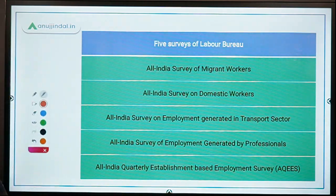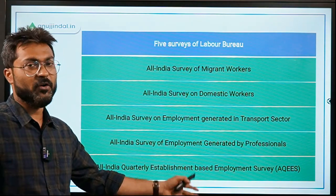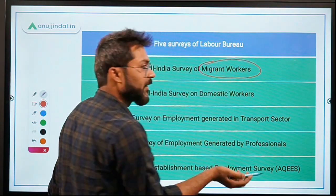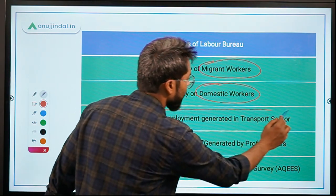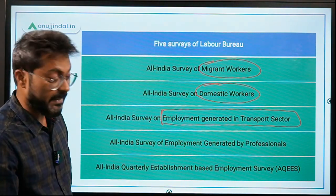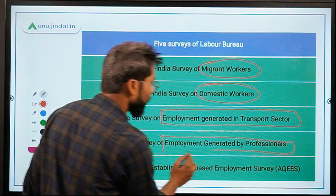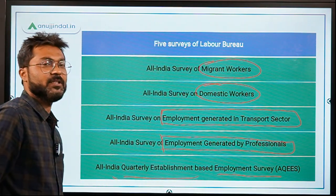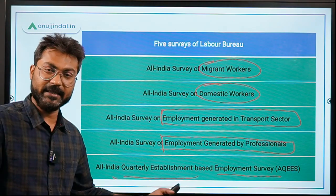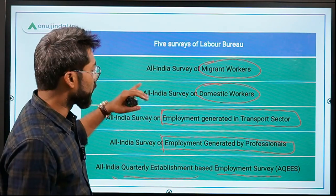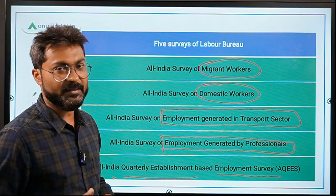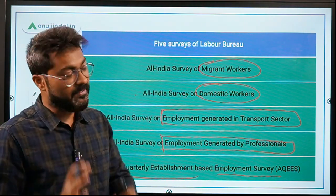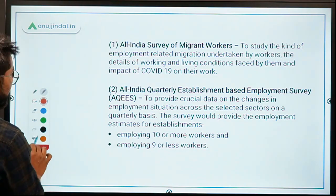These are the 5 surveys that will be conducted by the Labor Bureau: (1) All India Survey on Migrant Workers, (2) Survey on Domestic Workers, (3) Survey of Employment Generated in the Transport Sector, (4) Employment Generated by Professionals, and (5) All India Quarterly Establishment Based Employment Survey, known in short as AQEES. The domestic workers survey will be conducted for the very first time.